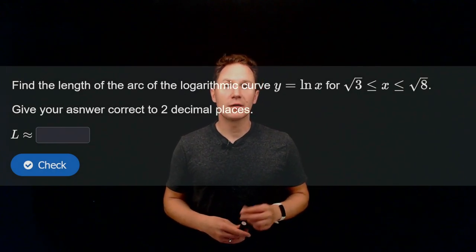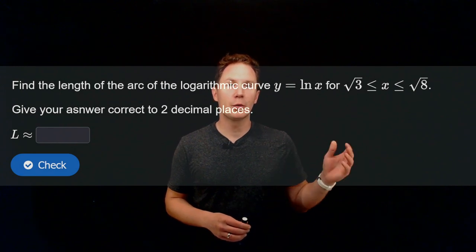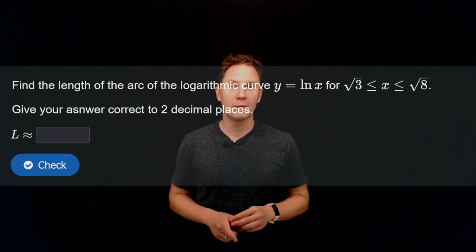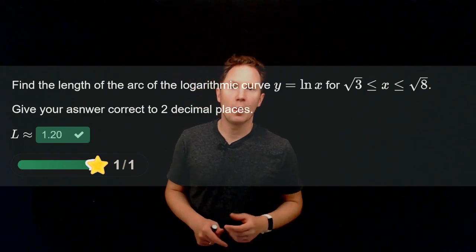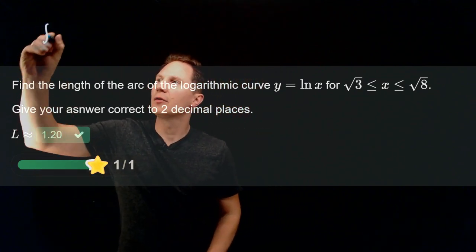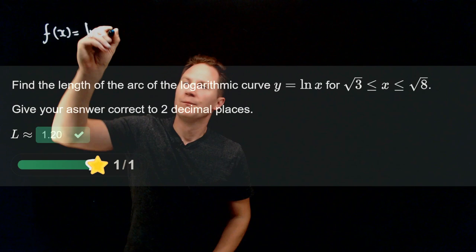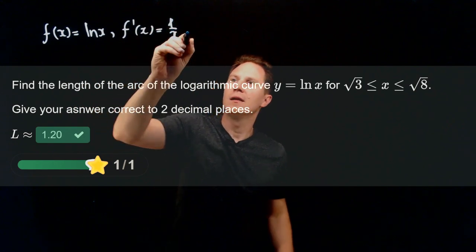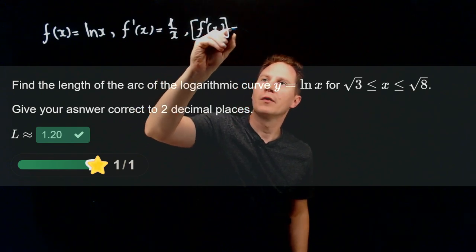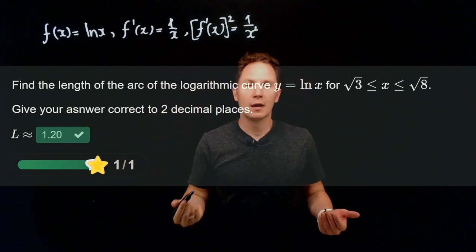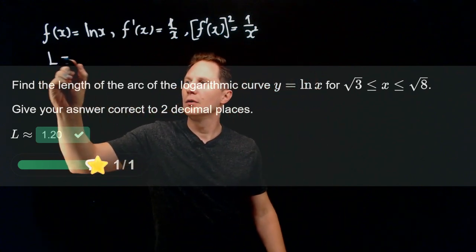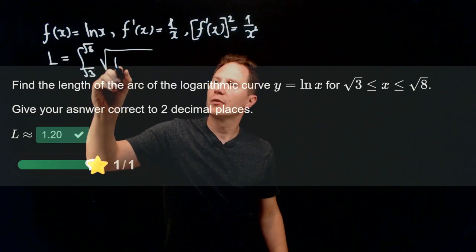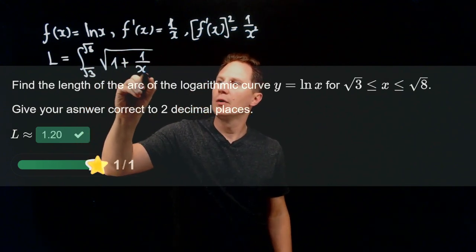Next, find the length of the arc of the logarithmic curve y = ln(x) as x varies from √3 to √8. The answer is approximately 1.20. We use f(x) = ln(x), so the derivative is 1/x, and its square is 1/x². The arc length integral is the definite integral from √3 to √8 of the square root of 1 + 1/x², dx.